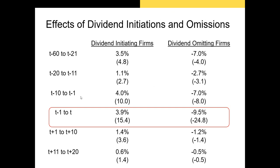This is a standard event study, meaning the authors are looking at abnormal returns around the event date, which is day t. They're essentially adjusting returns to account for market returns — basically the firm's stock returns minus the market returns on that day. The authors show abnormal returns over the 60 days prior to the dividend initiation or omission, all the way out to 20 days after.